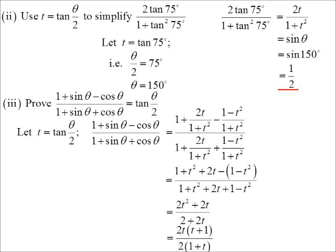Again, there's some factorizing there. Two T, T plus one, two, one plus T. Everything cancels there, except of course, I'm left with T. But we said T was tan theta on two. So there's my proof. It does equal tan theta on two.